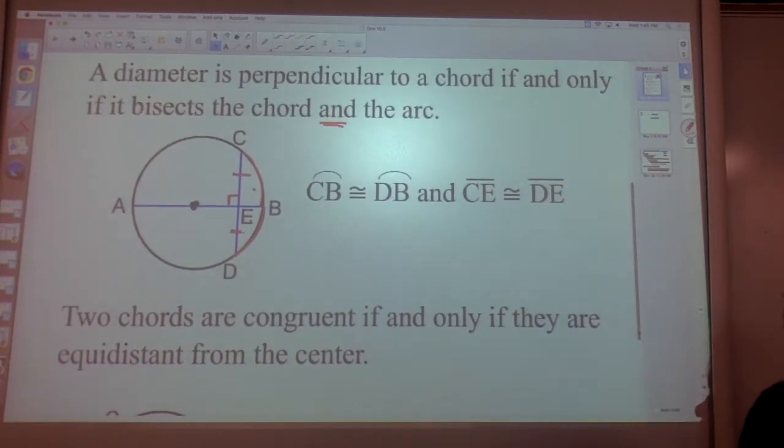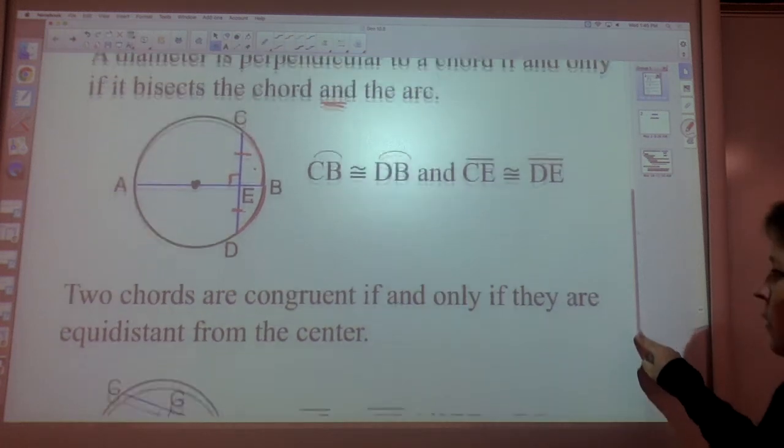And then the third one. Two chords are congruent. There's if and only if again. Two chords are congruent if and only if they are equidistant from the center. Equidistant from the center.